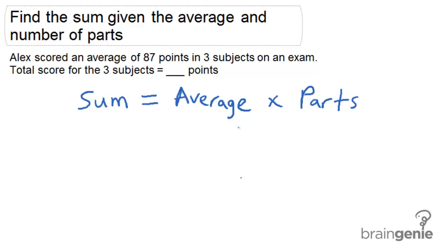In this case, it tells us that the average was 87 points and that the number of parts was three subjects. So our sum is going to be equal to our average of 87 times 3.